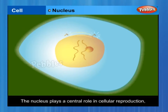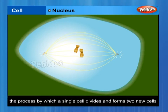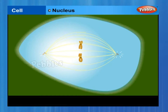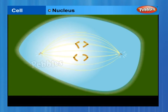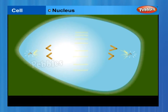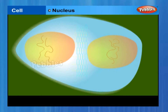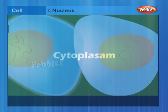The nucleus plays a central role in cellular reproduction, the process by which a single cell divides and forms two new cells. It also plays a crucial part, along with the environment, in determining the way the cell will develop and what form it will exhibit at maturity by directing the chemical activities of the cell.